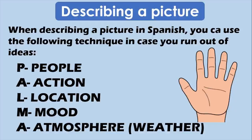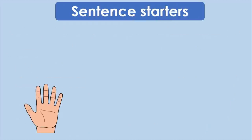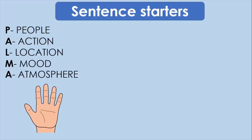When we are going to make reference to people, to actions, to locations, mood, and atmosphere that the picture is showing — first of all, we cannot do any of these without talking about sentence starters. So we will need to learn a couple of sentence starters by heart in order to be completely successful.